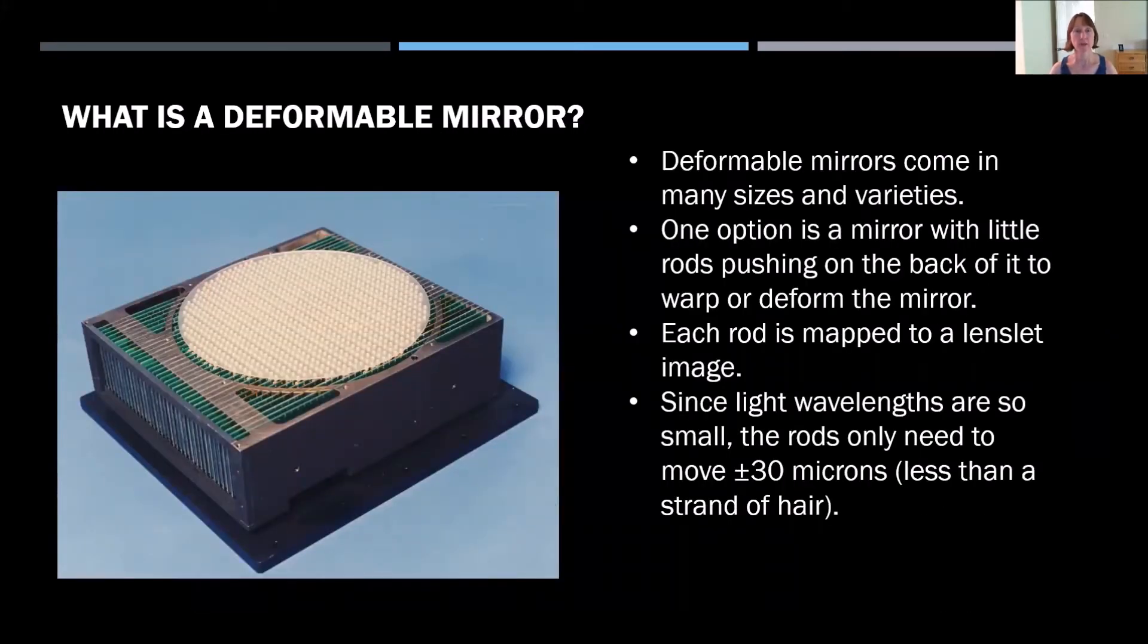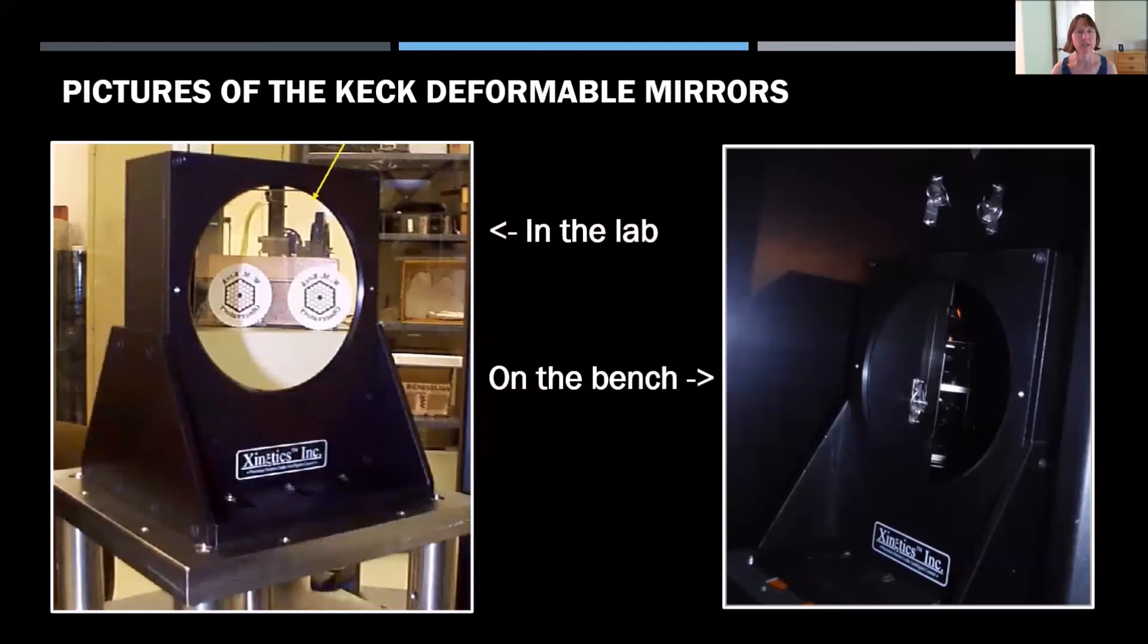So this is a picture of the deformable mirror without the glass on the front. And you can see these little rods. These rods correspond to each one of those little lenslets that I showed you earlier. And they push against the surface of the mirror to deform it. Now they don't have to push it very far since light wavelengths are so small. These rods only need to move the surface of the mirror up to plus or minus 30 microns, which is less than the size of one strand of hair. So this is a picture of our actual deformable mirror that we use at Keck. This one is when it's in the lab and they set it up to reflect a picture of one of our coasters. Fun fact, this is when we only had one telescope at the summit instead of two, which is why there's only one mirror described here. And then this is the picture of what the deformable mirror looks like when it's sitting on our AO bench.